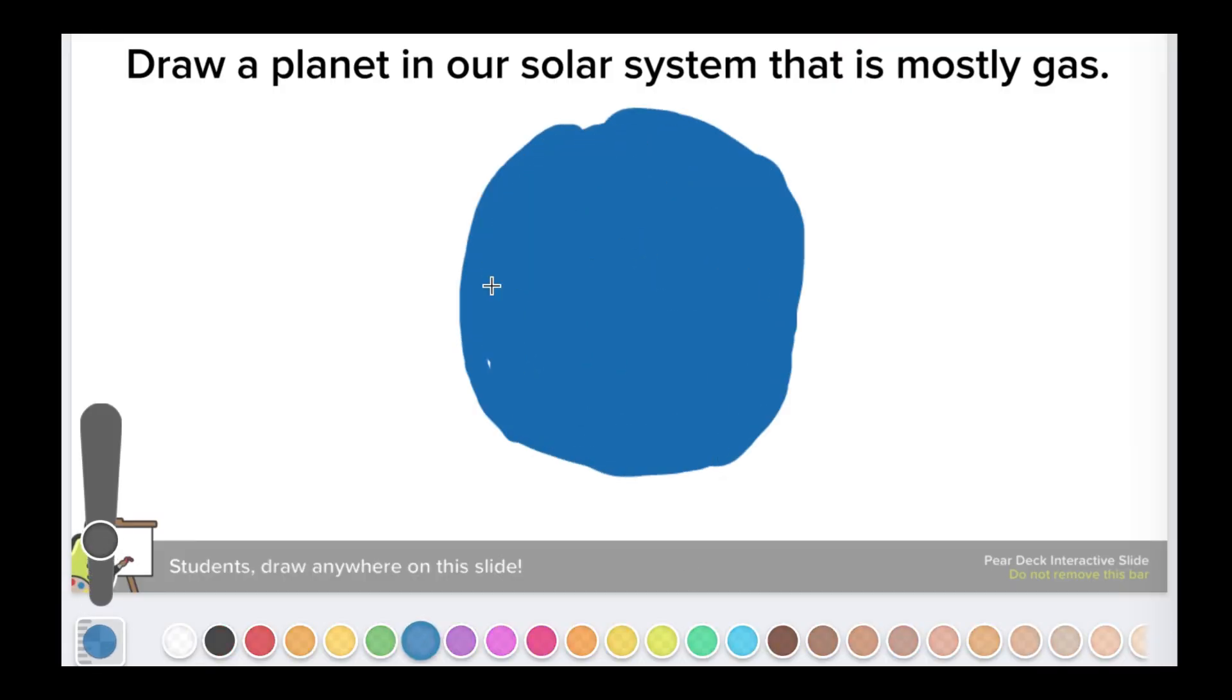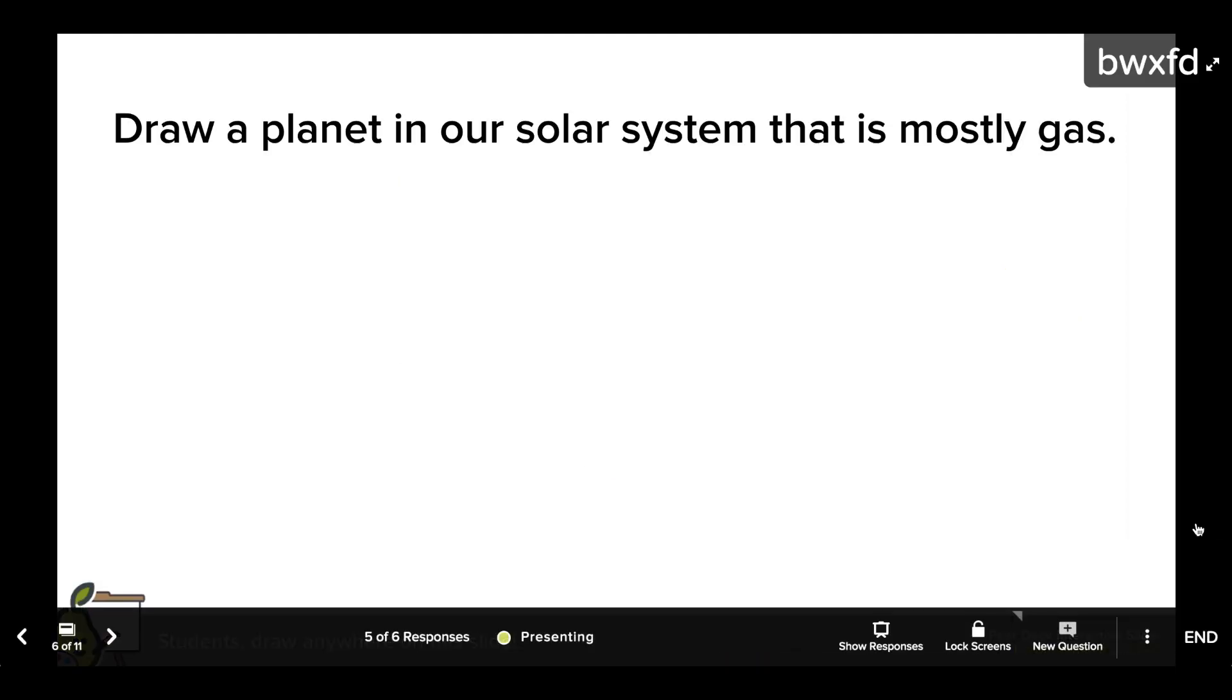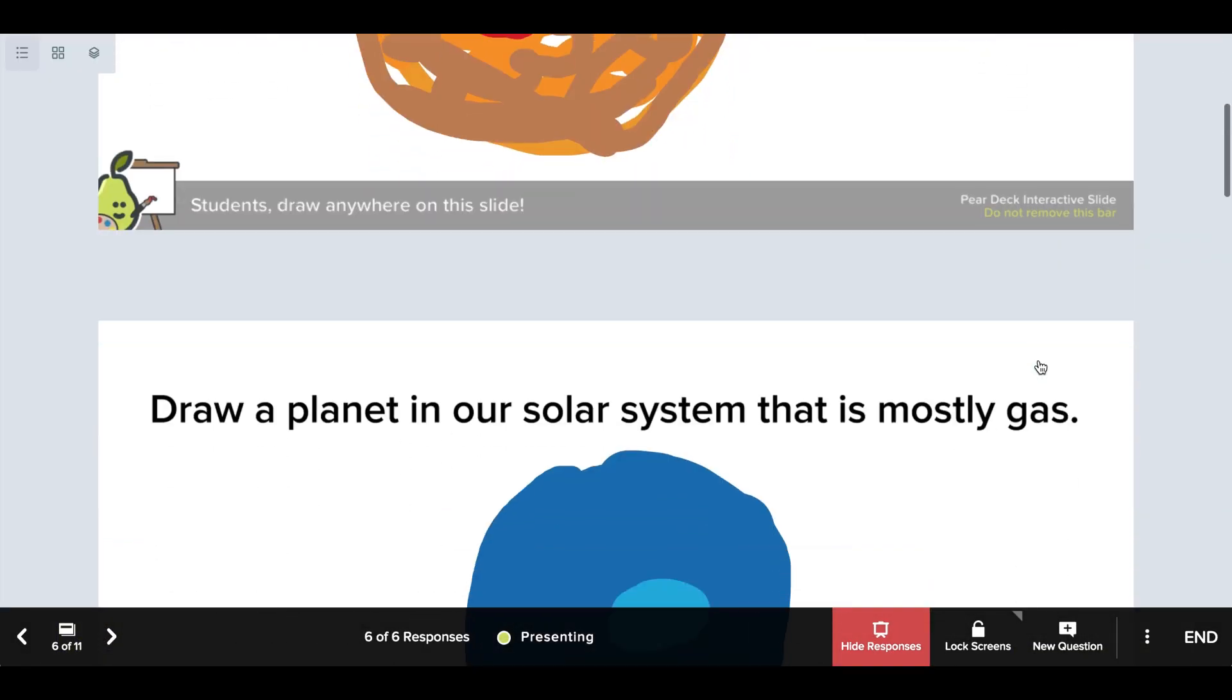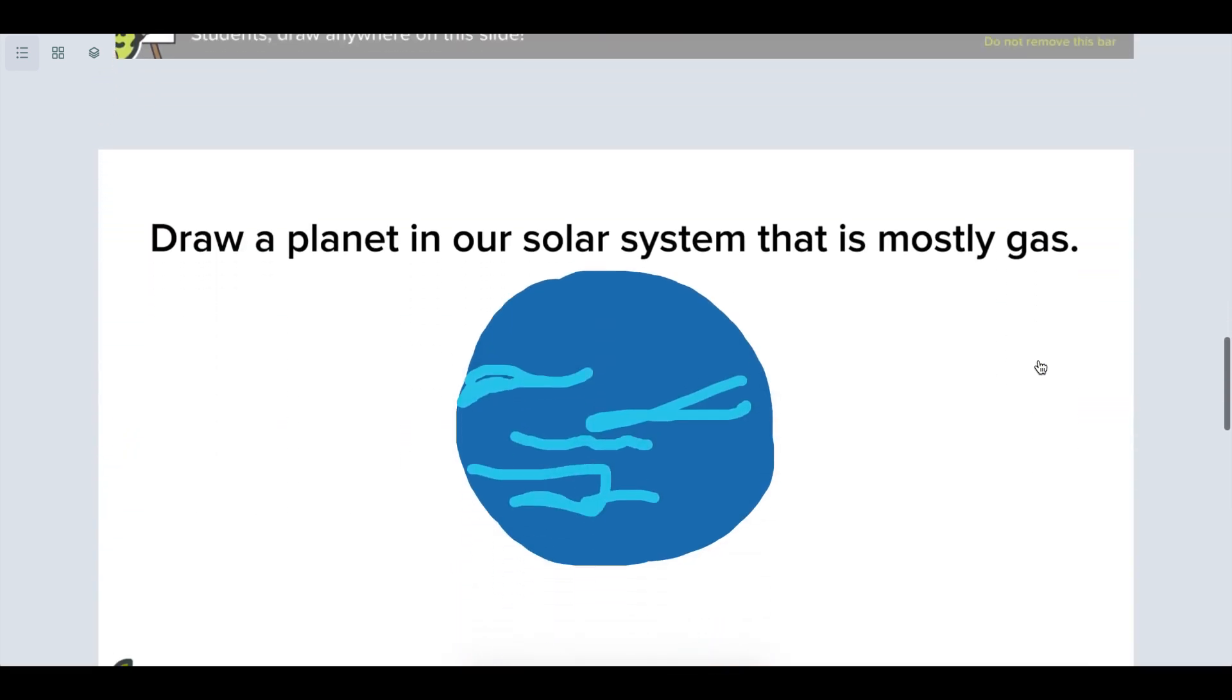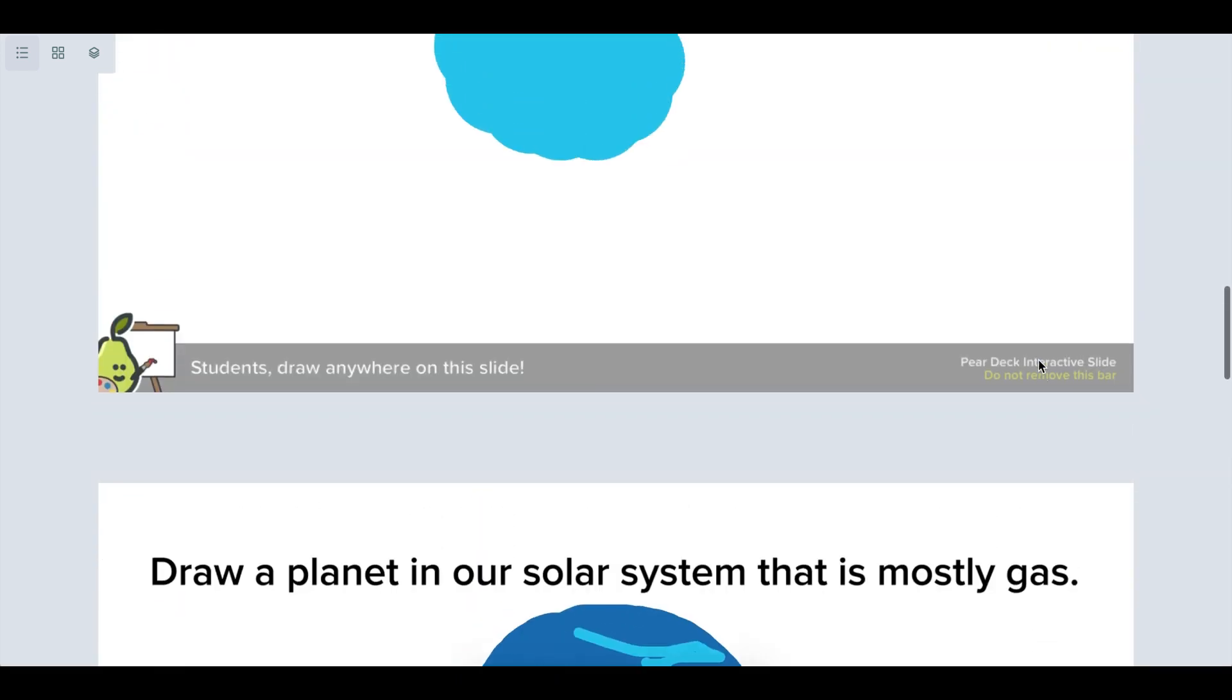When you move to an interactive slide, students will be able to respond on their screens. You can show student responses on the projector screen so everyone can see different approaches and ideas. Responses are always anonymous when shown on the Pear Deck projector view.